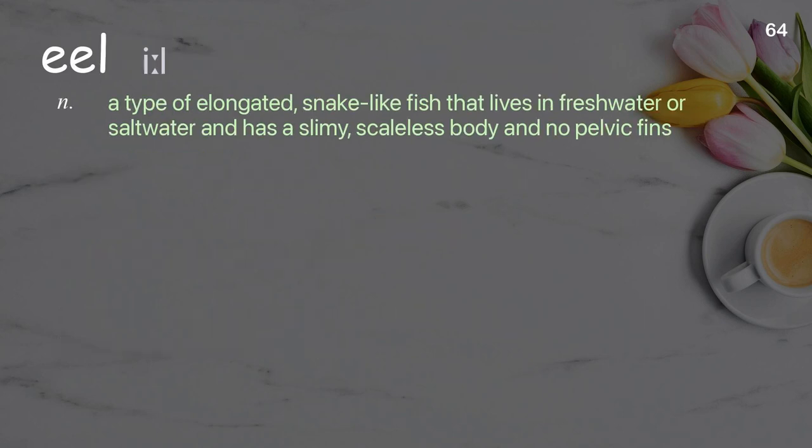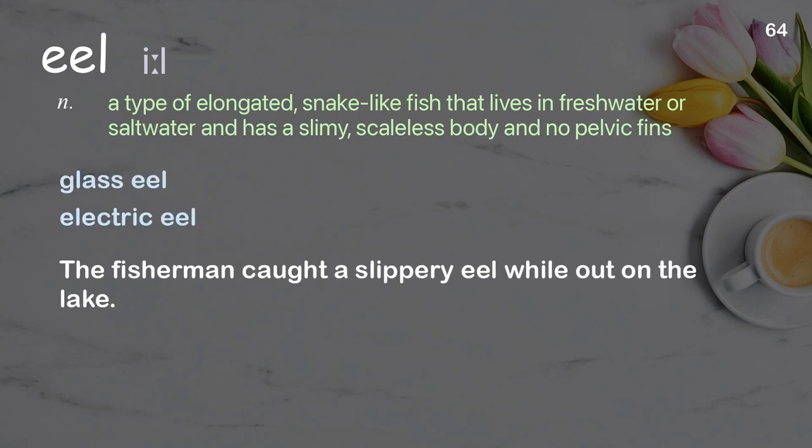Eel: a type of elongated, snake-like fish that lives in freshwater or saltwater and has a slimy, scaleless body and no pelvic fins. Examples: glass eel; electric eel. The fisherman caught a slippery eel while out on the lake.